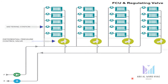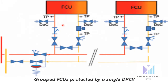Here is the circuit for this type of DPCV in fan coil units. The DPCV is shown along with the metering station, which includes the two-way port valve and the FCU. In another circuit, the DPCV is fixed on the main line, with branch lines containing two FCUs, a two-port valve, and a regulating valve.